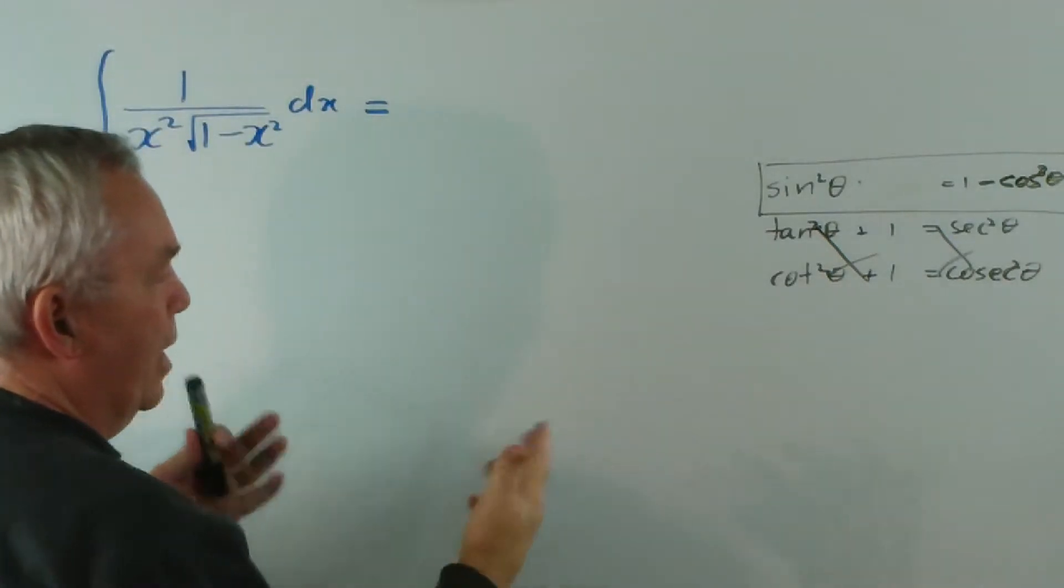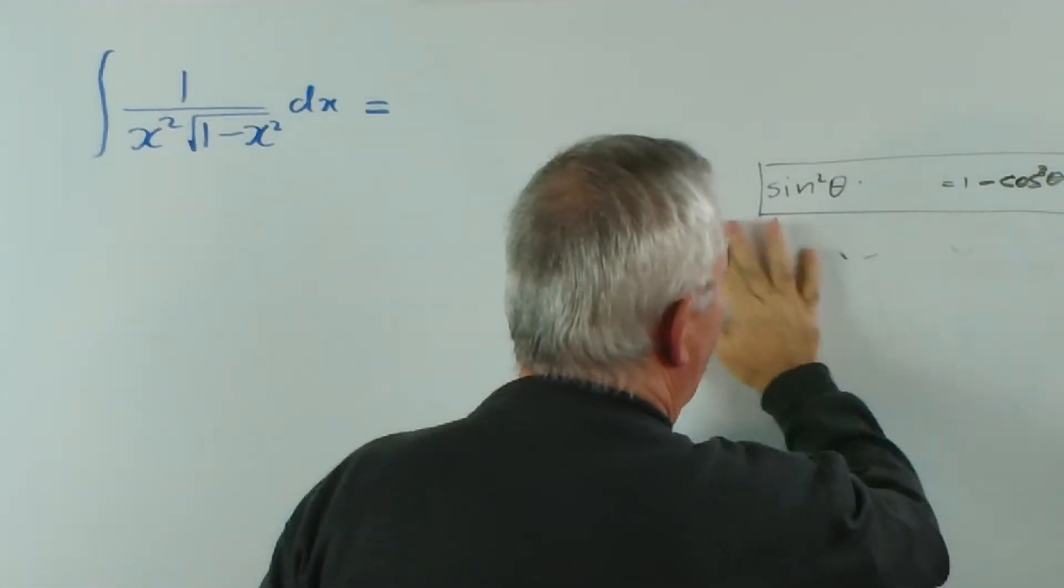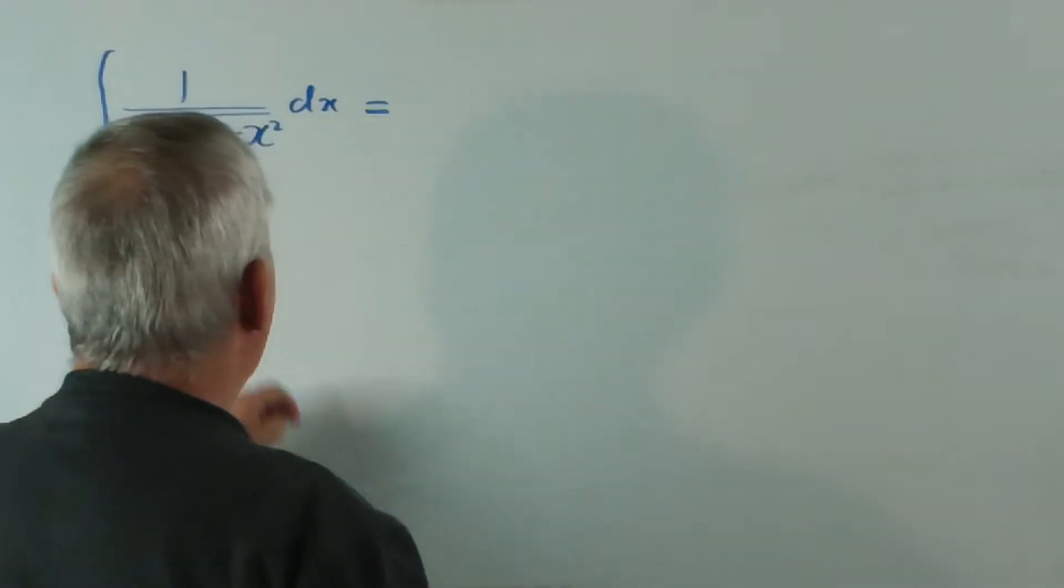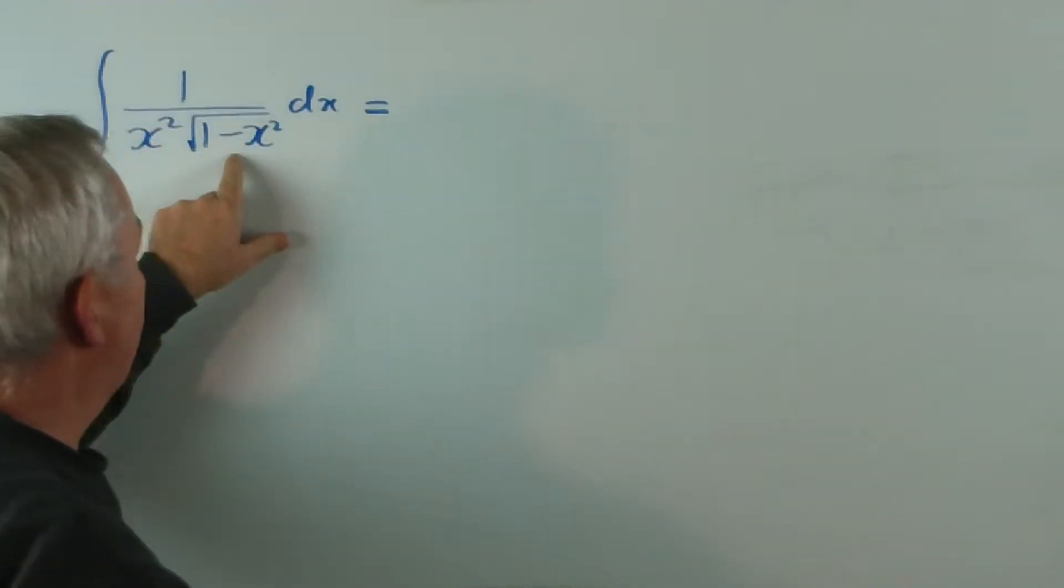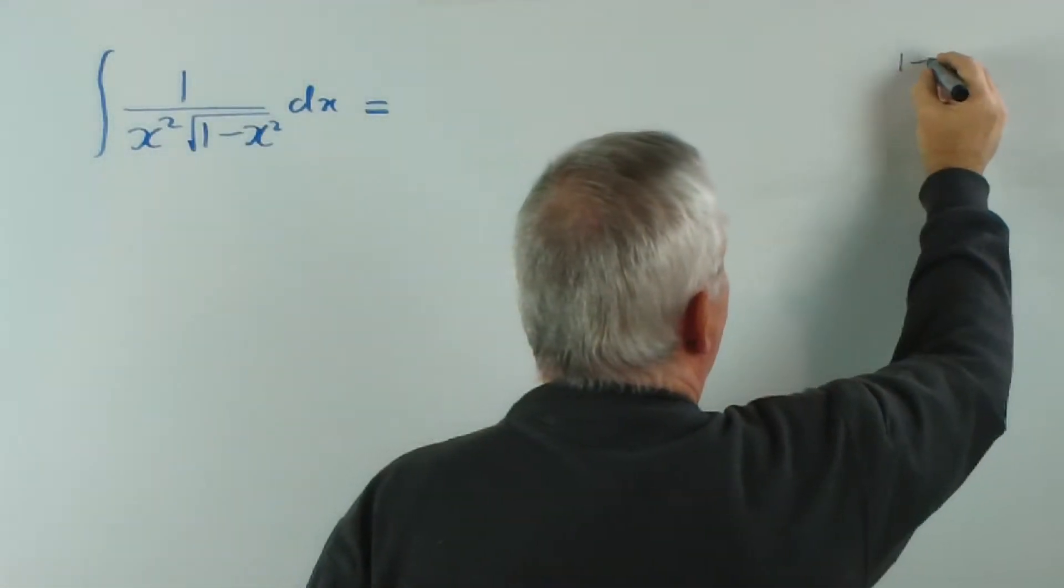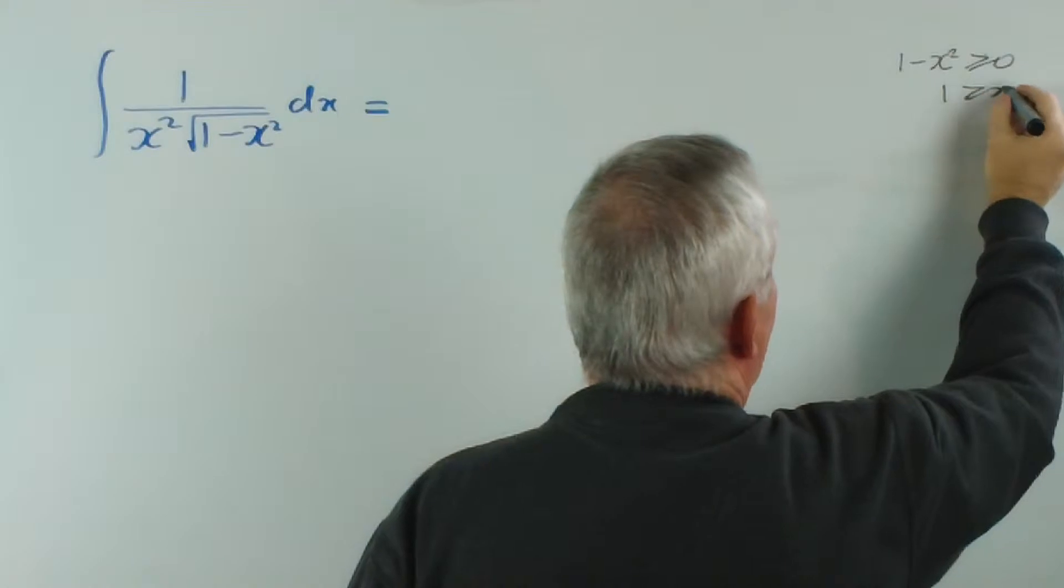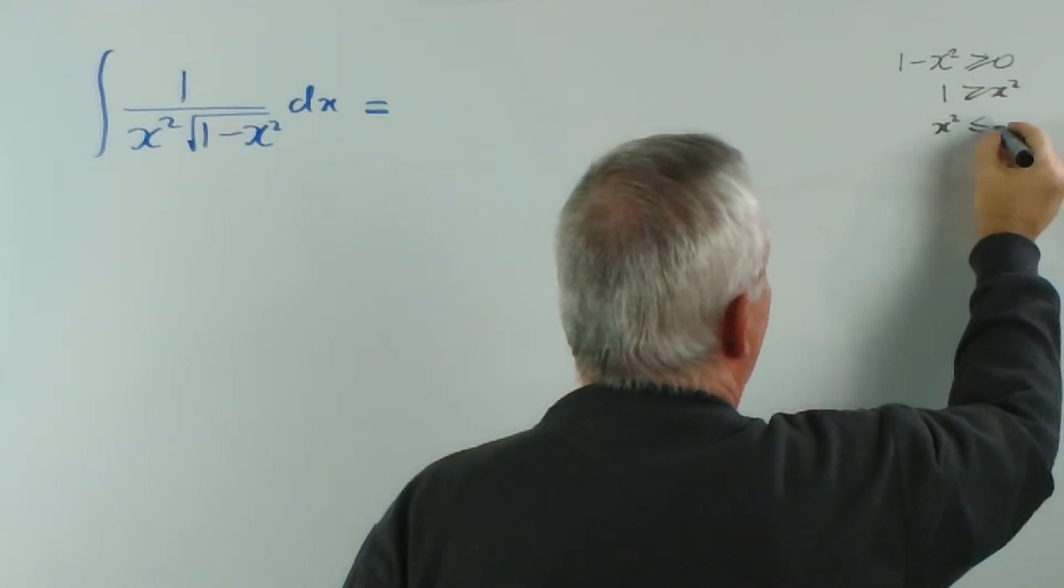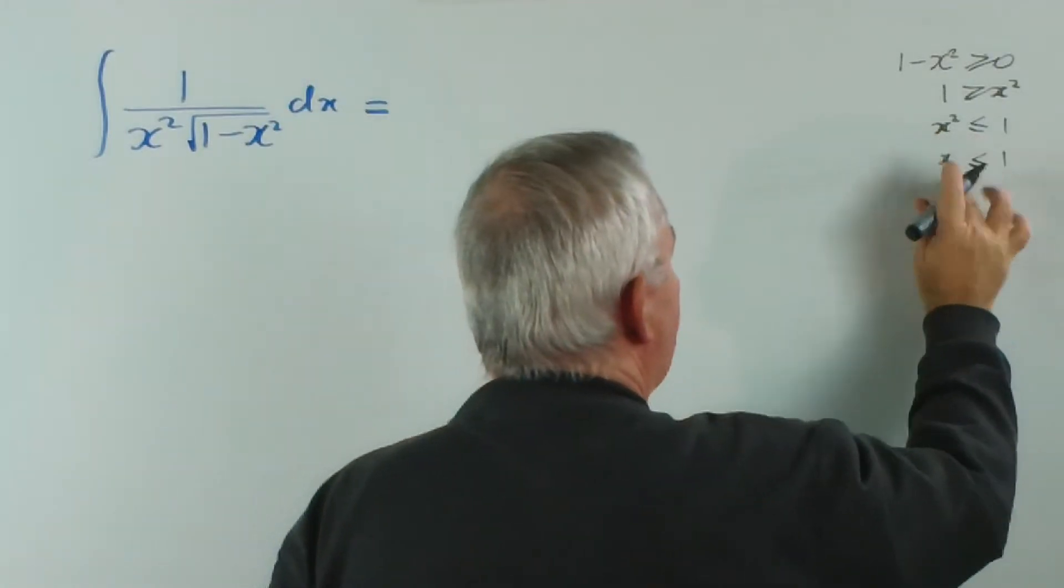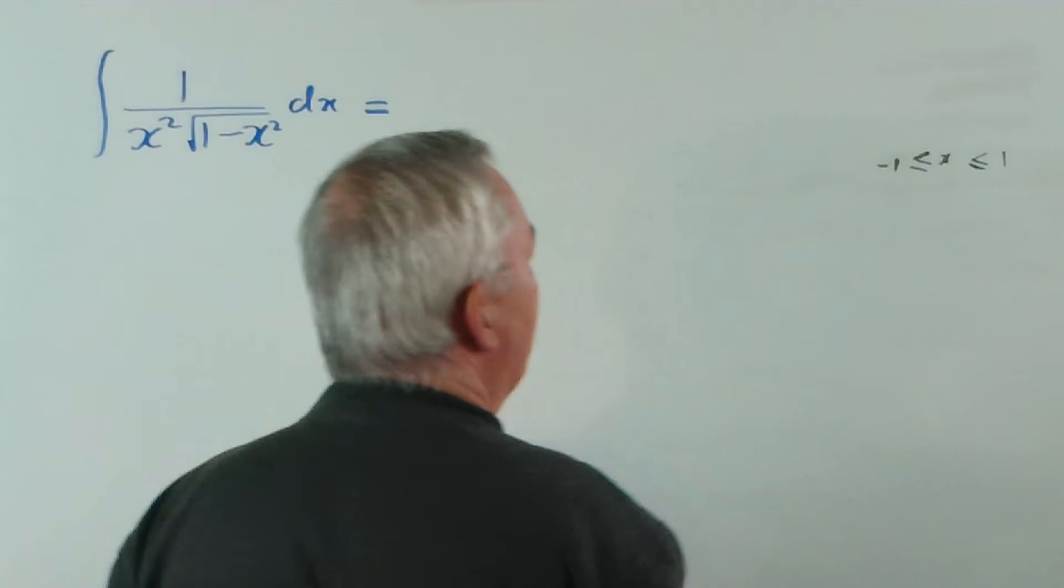So our substitution is going to be for sin or cos. Now, I'm going to be substituting x = sin θ. So let's have a look at what that gives us. First of all, observe that in here, 1 - x² cannot be negative. So 1 - x² must be greater than or equal to 0. So 1 ≥ x². Or if you reverse it, that means the absolute value of x is less than or equal to 1. Or, if you like, x lies between -1 and 1. So we'll just leave that on the side to qualify what we're doing.